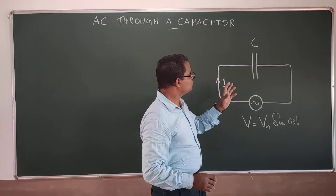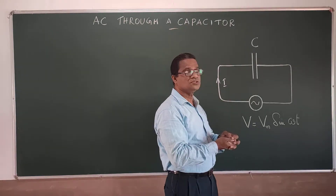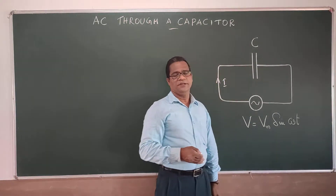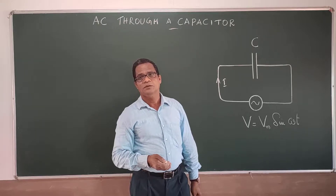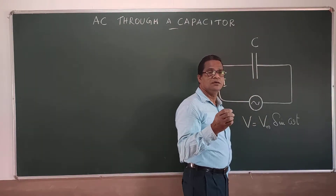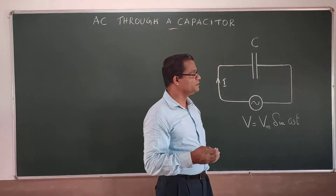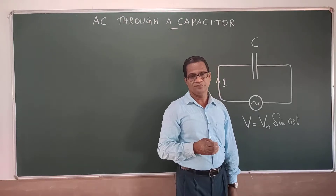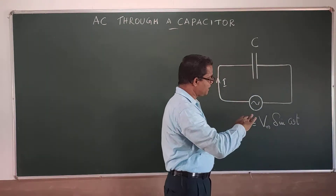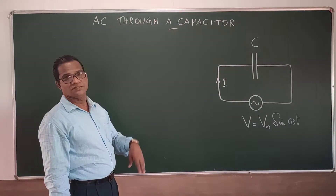Conduction is possible through charging and discharging, and as the charging and discharging is going on, there will be a displacement current. Through this gap there will be a current called displacement current, which is introduced in electromagnetic waves. So through the charging and discharging of the capacitor, conduction through this capacitor circuit is possible.